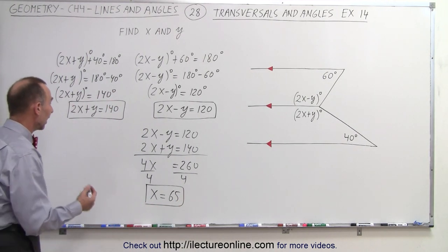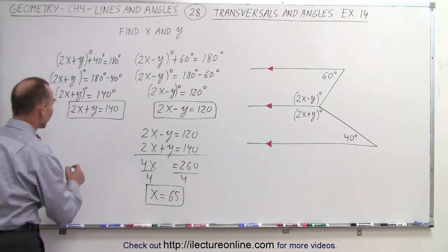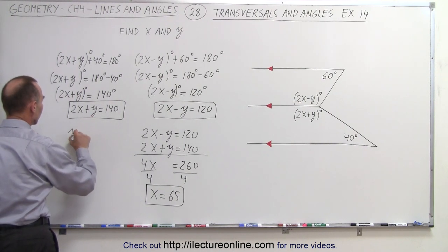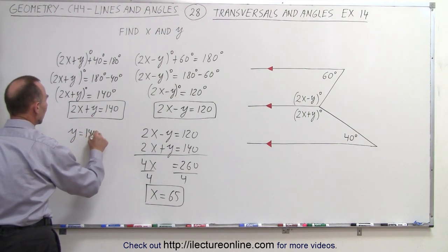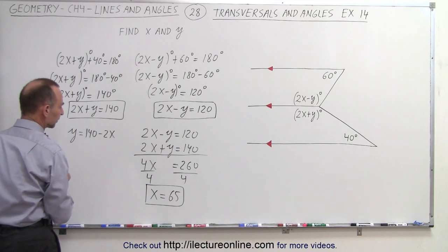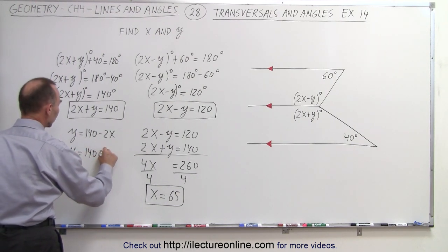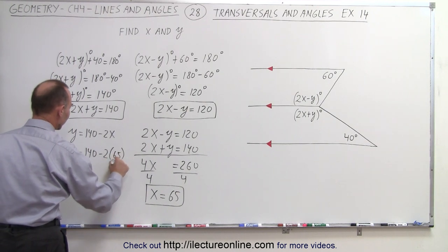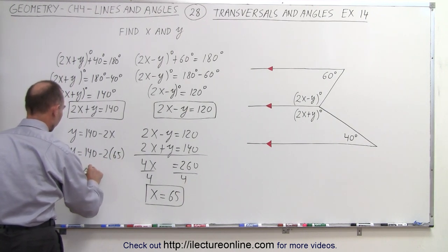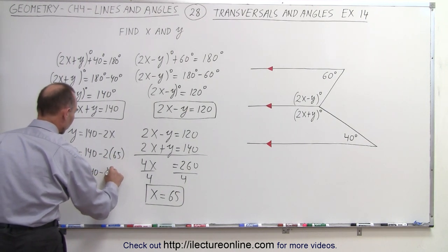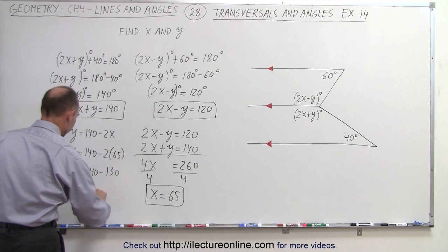Now that we have the value for x, we can solve for the value for y. So here we can write that y is equal to 140 minus 2x. y is equal to 140 minus 2 times 65. So y is equal to 140 minus 130. And y is equal to 10.